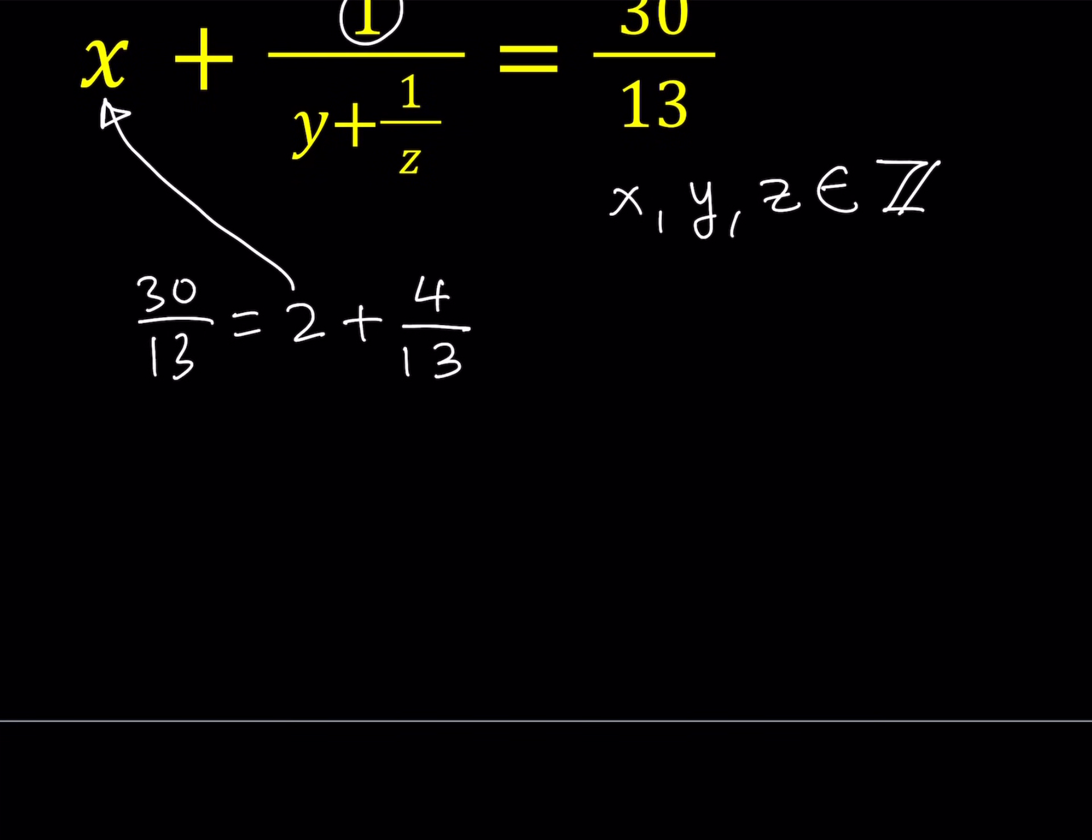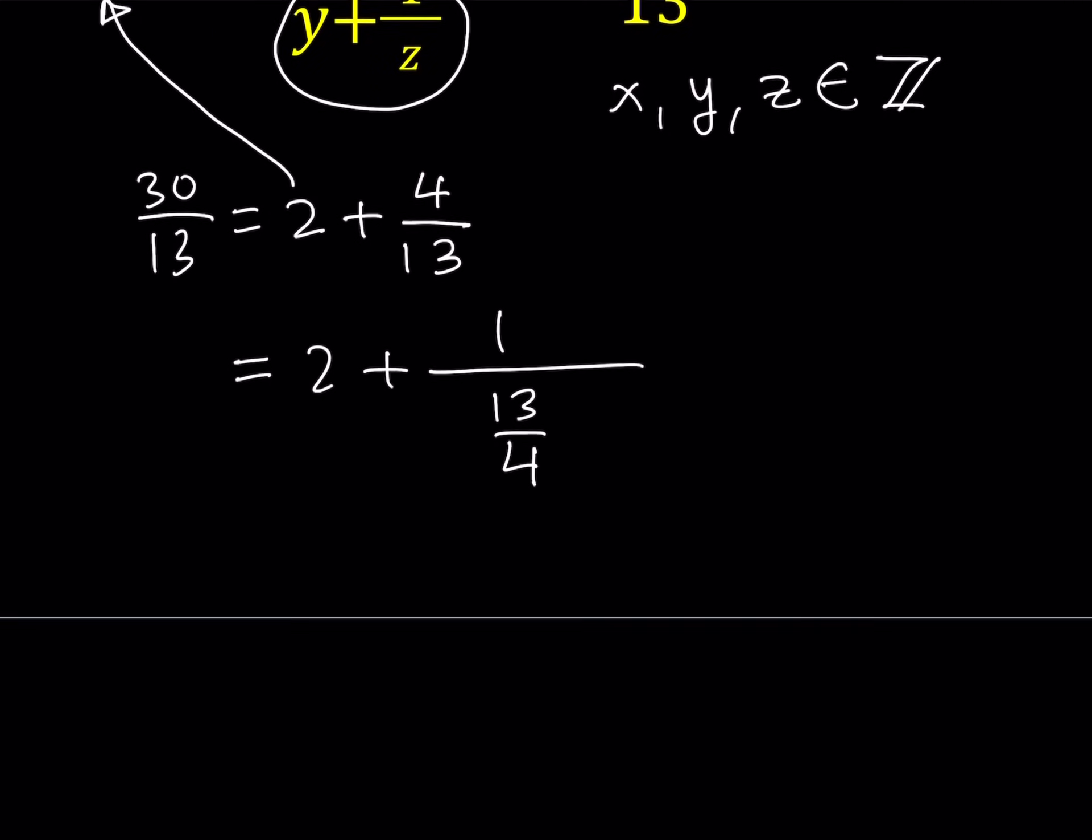4 over 13 is the reciprocal of what number? And the answer is 13 over 4, obviously. Well, hopefully it's obvious by now. Well, 13 over 4 is supposed to be the denominator here. But notice that y plus 1 over z is an integer plus 1 over an integer. 1 over an integer is like something like 1 tenth, 1 fifteenth, whatever. And when we add the integer, obviously we're going to get a non-integer. And 13 fourths is not an integer. So what we're going to do next is just break down the 13 fourths. And I can write it as, what can I write it as?